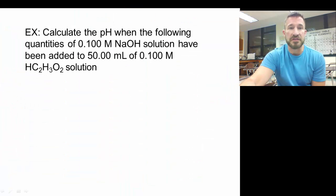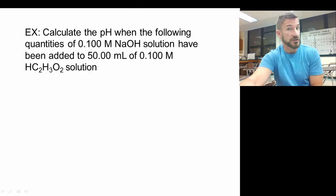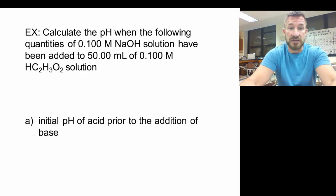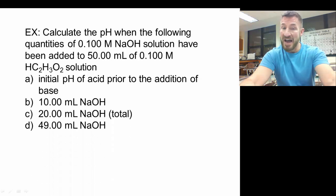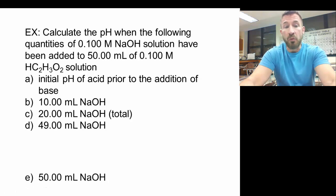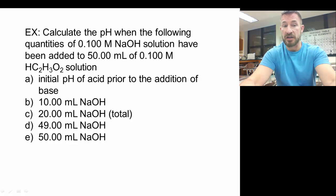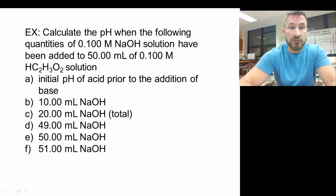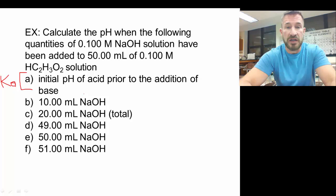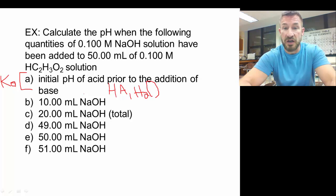The problem we're going to do is calculate the pH when the following quantities of sodium hydroxide, a strong base, are added to our weak acid, acetic acid. We'll find the pH initially, after adding 10, 20, and 49 milliliters, then at 50 milliliters, and finally at 51 milliliters. The first type is a Ka calculation, because at the very beginning, the major species are HA and water — a type of calculation we've already done multiple times.